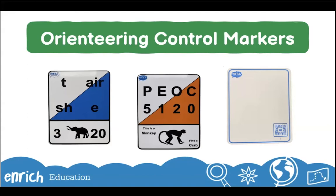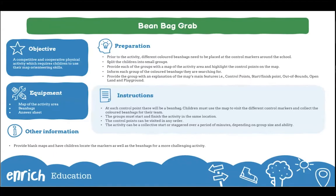Having orienteering infrastructure installed at a school opens up a wealth of opportunities, ranging from conventional orienteering to other outdoor activities using the school's maps and markers. There are also lots of associated activities to introduce children to orienteering so that when they start full orienteering activities they can take part with confidence. Let's start by looking at how a school's orienteering course can be used within PE and games lessons. The first activity is called Beanbag Grab — a simple activity to familiarize children with the orienteering map and control markers.